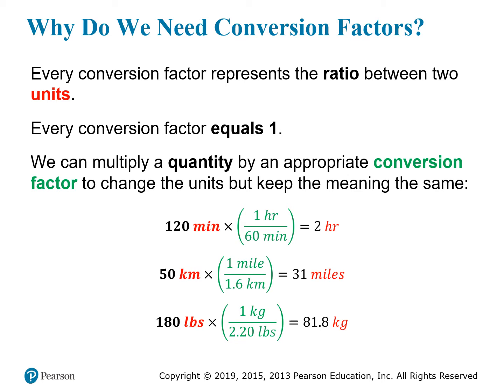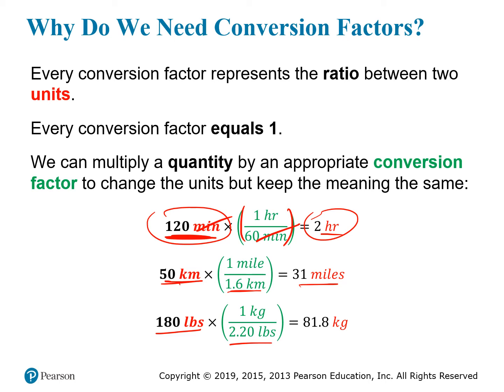As an example, 120 minutes is a measurement of a length of time. If we take 120 minutes and multiply it by the conversion factor that relates hours and minutes, the minutes will cancel out and leave hours. Once you do the math, you see that 120 divided by 60 equals 2. So we've taken a length of time measured in minutes and transformed it into the same length of time, but now measured in hours. The same thing can be done for any unit — we can take kilometers and by multiplying by a miles-to-kilometers conversion factor, transform it into miles; for pounds, we can use the kilogram-to-pounds conversion and transform it into kilograms.